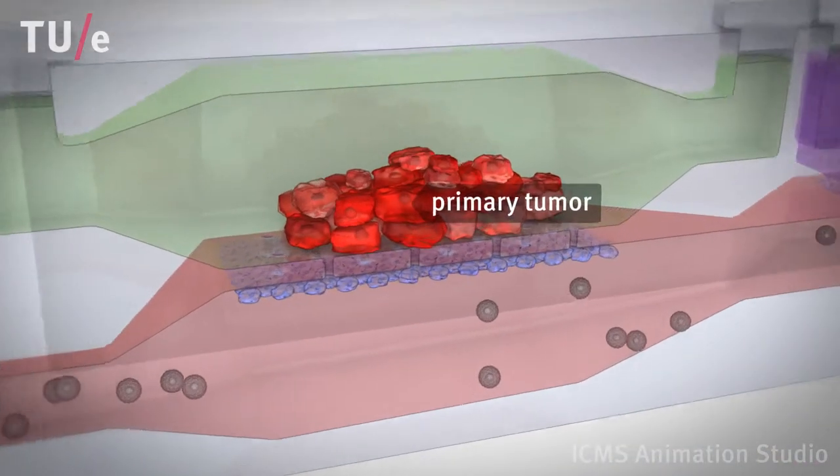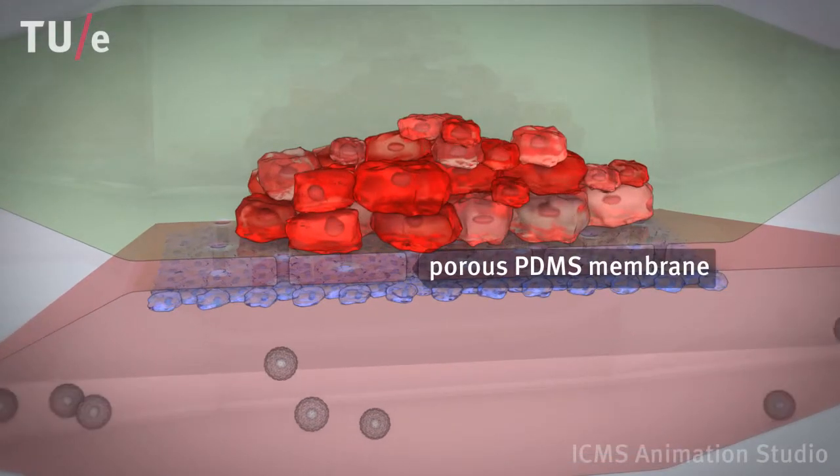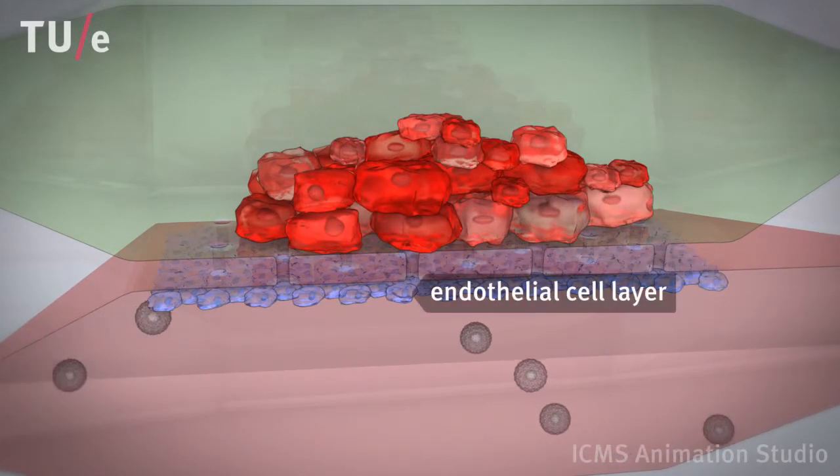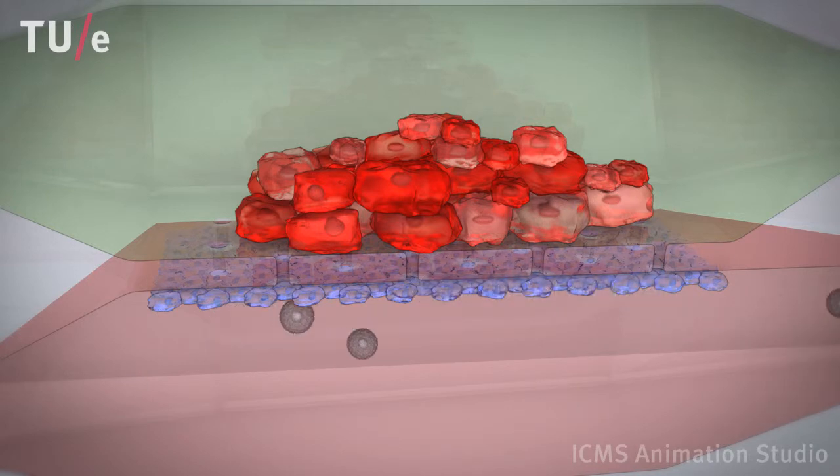The primary tumor is grown in a microchamber. This microchamber is separated by a porous membrane covered with an endothelial cell layer from a microchannel representing the bloodstream.